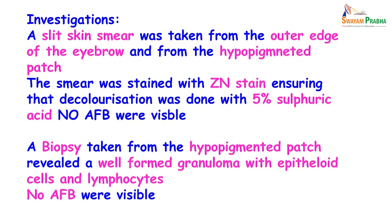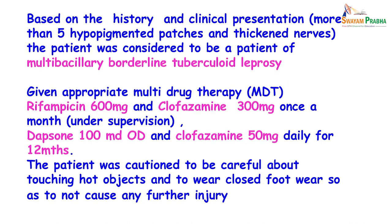All these findings confirmed that the patient was suffering from borderline tuberculoid leprosy. Appropriate multidrug therapy consisting of rifampicin and clofazimine once a month under supervision, as well as dapsone 100 mg daily and clofazimine 50 mg daily unsupervised, was given for a period of 12 months. The patient was cautioned to be careful about touching hot objects and to wear covered footwear to avoid further injury.